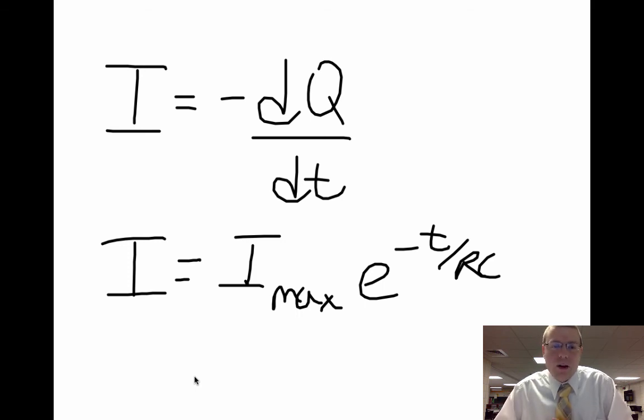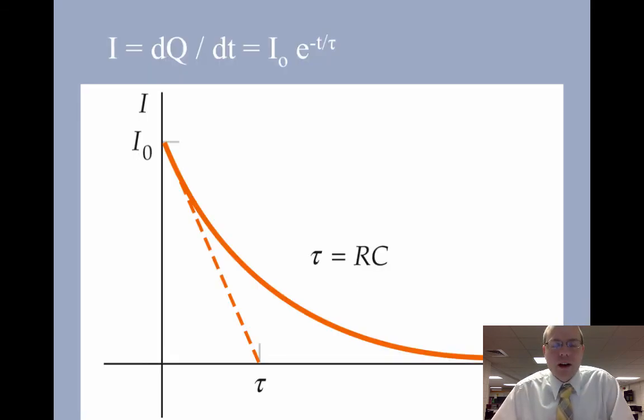So if we would graph the current as time goes on, we can see that the current starts off at some maximum and then decreases as time goes on.